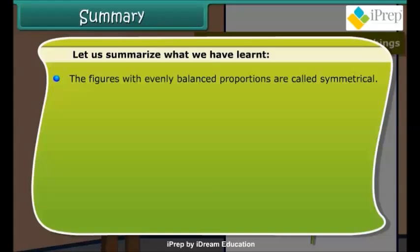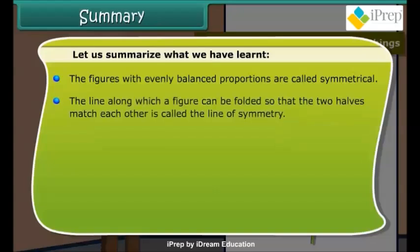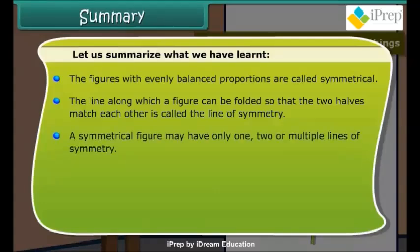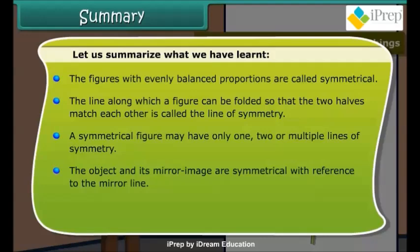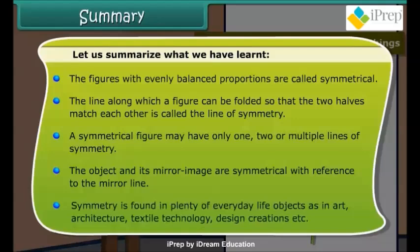Summary: Figures with evenly balanced proportions are called symmetrical. The line along which a figure can be folded so that the two halves match each other is called the line of symmetry. A symmetrical figure may have one, two, or multiple lines of symmetry. The object and its mirror image are symmetrical with reference to the mirror line. Symmetry is found in plenty of everyday life objects, including art, architecture, textile, technology, and design.